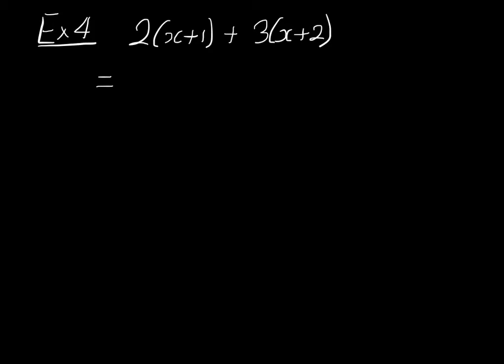Now, what we're going to do is we're going to expand the bracket of each one separately first. So let's do the first one. 2 multiplied by x is 2x. And 2 multiplied by 1 is 2. So you have 2x plus 2. And you'll do the second one separately. 3 multiplied by x. You have a plus here. This plus stays here. You have 3 multiplied by x is 3x. And 3 multiplied by 2 is 6.